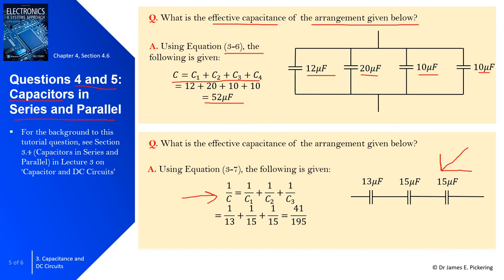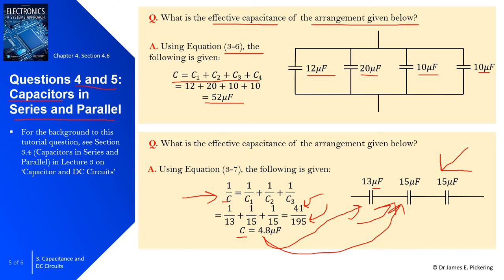Using that equation with values of 13, 15, and 15 microfarads — ignoring the 10 to the power of minus 6 for now — we find a common denominator of 195, giving a numerator of 41. Flipping the equation, C equals 195 over 41, so the effective capacitance for the three capacitors in series is 4.8 microfarads. A quick check: this number should be less than all individual values — 4.8 is indeed less than 13, 15, and 15, confirming we're in the right area.